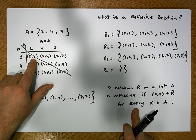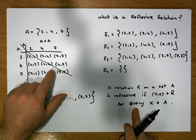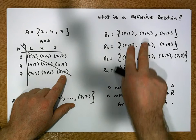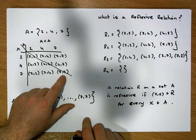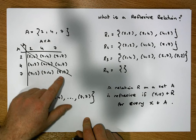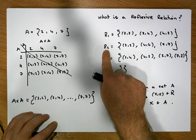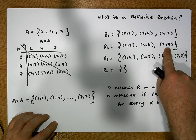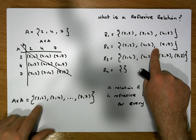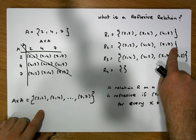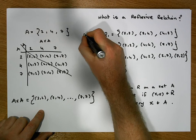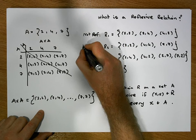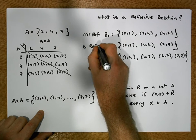But r1 must also contain (4,4) and (7,7), and it doesn't — so r1 is not reflexive for two reasons: it doesn't contain (4,4) and it doesn't contain (7,7). Looking at r2, which contains {(2,2), (4,4), (7,7)}: r2 contains everything down the main diagonal, so r2 by definition is reflexive.